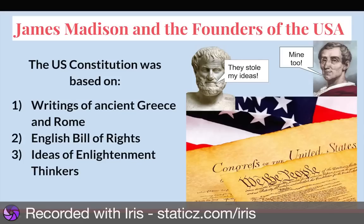James Madison and the founders of the United States took ideas from ancient Greece and Rome — like Aristotle there — the English Bill of Rights, which was signed by William and Mary, which you learned in your last unit, and the ideas of the Enlightenment thinkers. And there you can see Montesquieu up there in the corner, with his ideas of three branches of government.